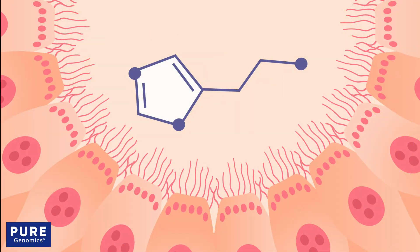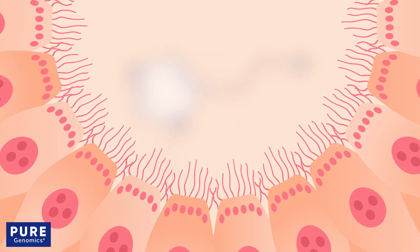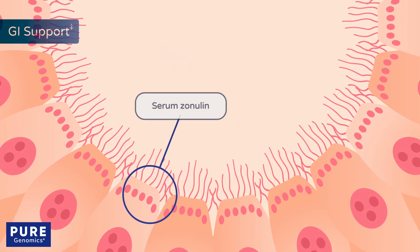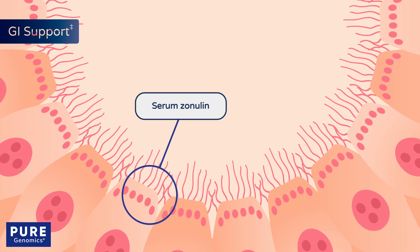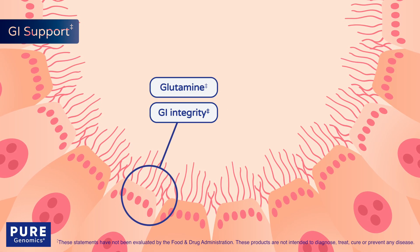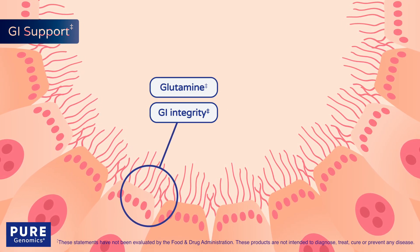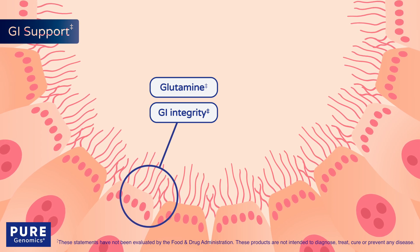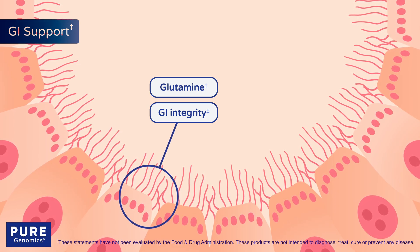Since histamine may affect the intestinal mucosa, assessment of barrier function through serum zonulin testing can help you decide whether glutamine or other supplements that support epithelial integrity are appropriate for the individual.